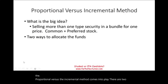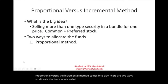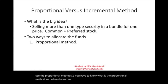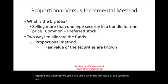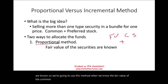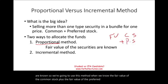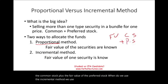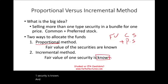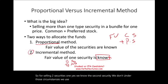There are two ways to allocate the funds. One is called the proportional method. We use the proportional method when the fair value of both securities are known — so when we know the fair value of the common stock plus the fair value of the preferred stock. We use the incremental method when the fair value of one security is known and the other one is not. Under those circumstances, we use the incremental method.